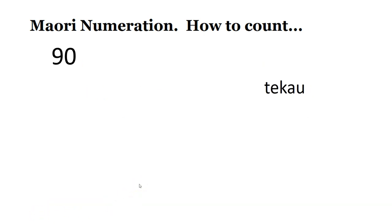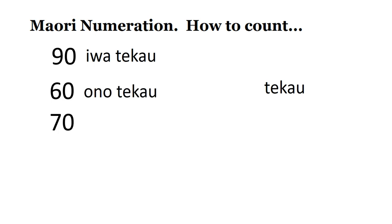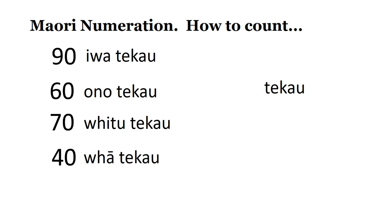Let's try it in a slightly different order. I'll say the number in English — you try and say the number in Māori before I say it. So number ninety — iwa te kau. Number sixty — ono te kau. Number seventy — fitu te kau. Number forty — whā te kau. Number thirty — toru te kau.